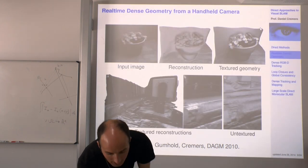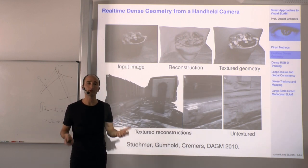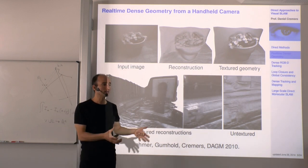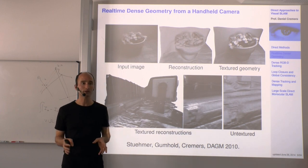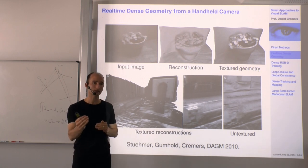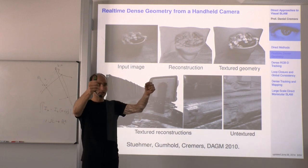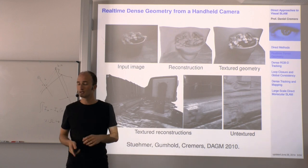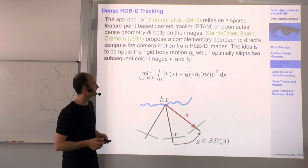Whether you want this kind of fill-in depends on the application. Sometimes you absolutely need dense geometry — for example, a robot driving around needs to know for any direction in space whether there is an obstacle. If you only have a sparse point cloud with points here and there, you can't tell if you can move in between, so a dense reconstruction is desirable.